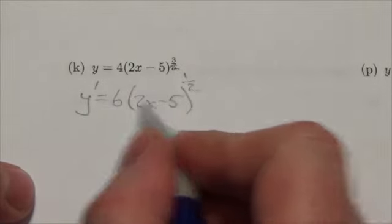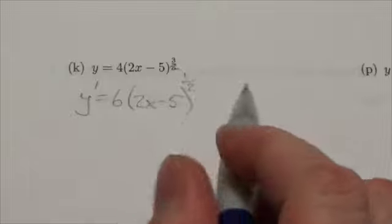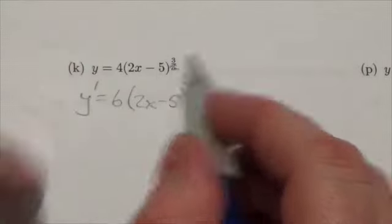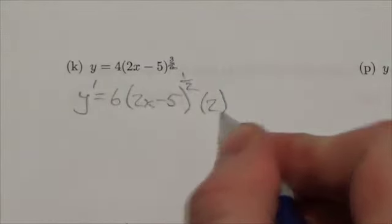And I'm going to multiply by the derivative of what's inside. Remember, we do what's outside the brackets and we do what's inside the brackets. And so I'm just going to multiply by 2.